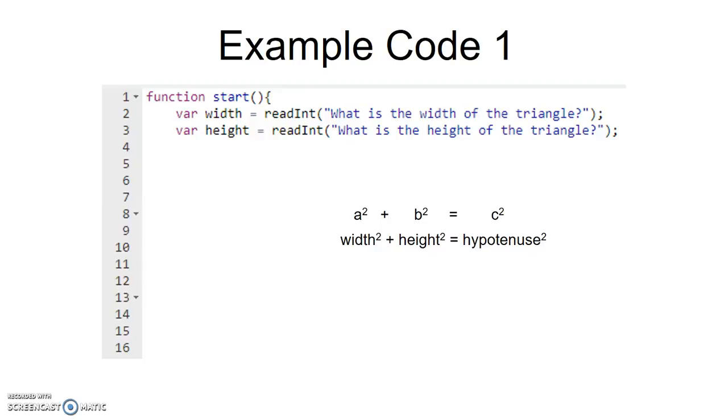We know that a squared plus b squared equals c squared, where a and b are the width and height, and c is the hypotenuse.